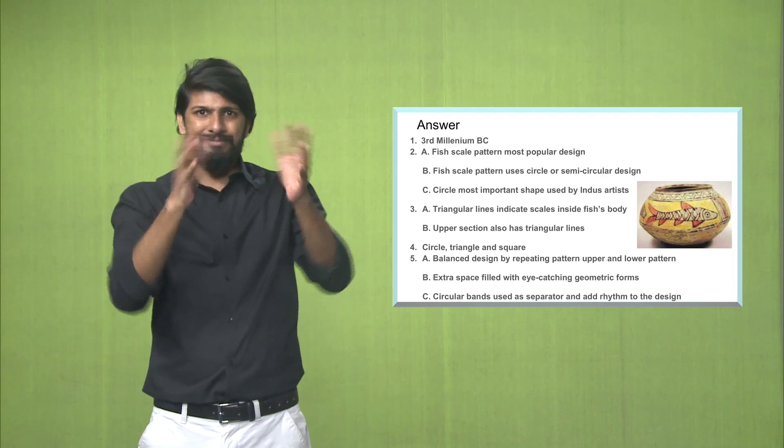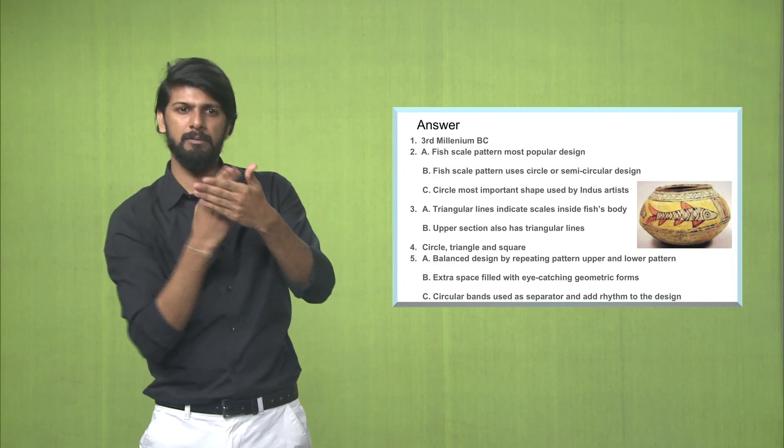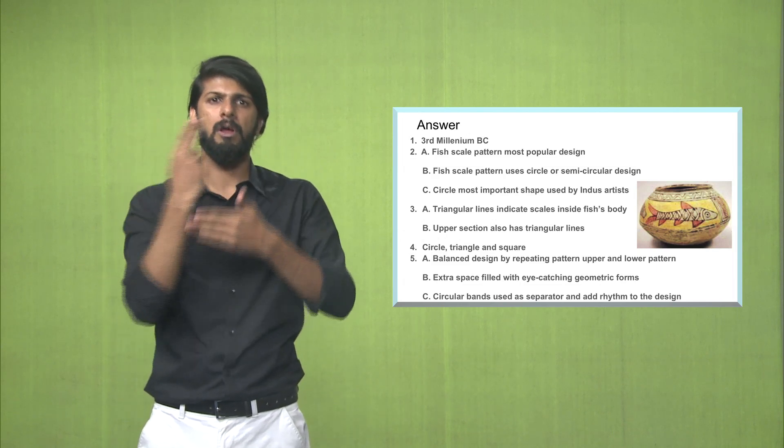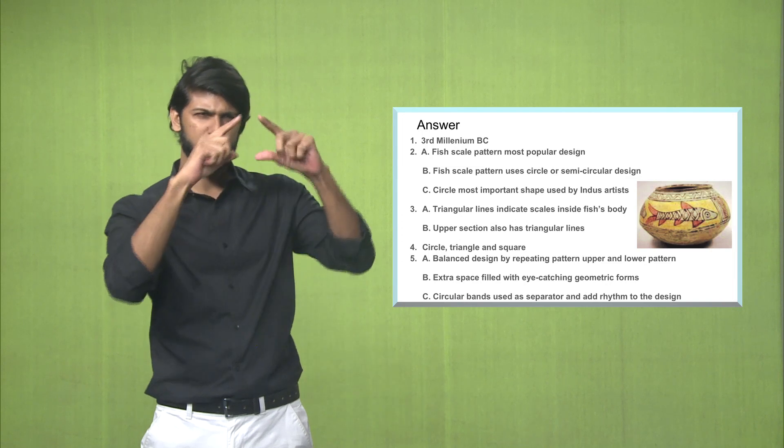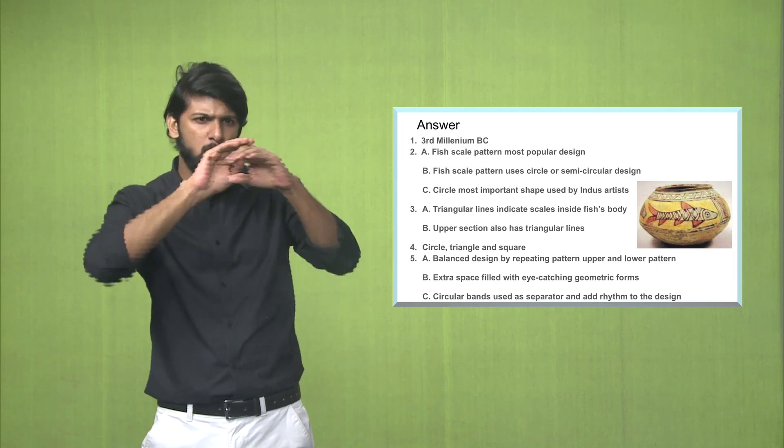Point C, the Indus valley civilization artists used circle prominently. It was a very important shape used by the Indus artists.